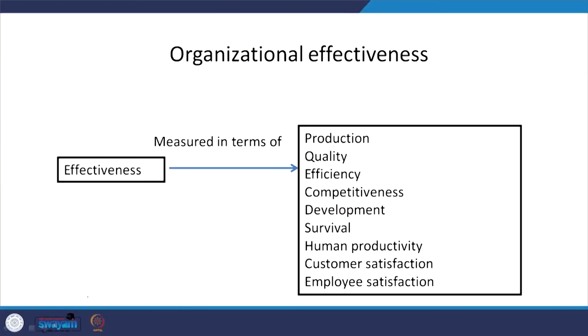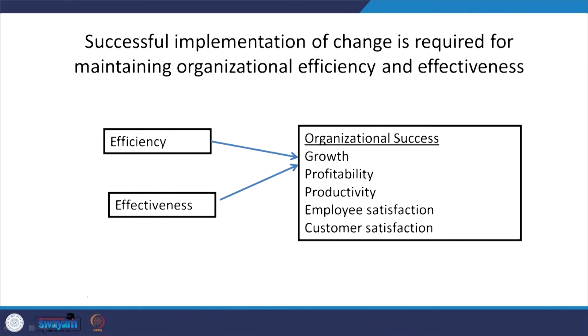Effectiveness is measured in terms of production, quality, efficiency, competitiveness, development, survival, customer satisfaction, and employee satisfaction. Successful implementation of change is required for managing organizational efficiency and effectiveness. Both efficiency and effectiveness can lead to organizational growth, profitability, productivity, employee satisfaction, customer satisfaction — otherwise called organizational success.